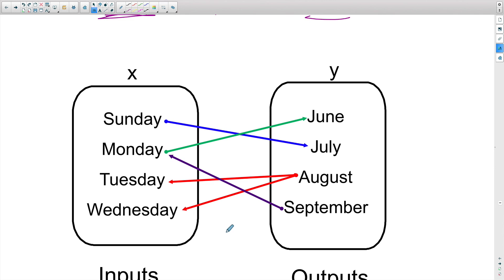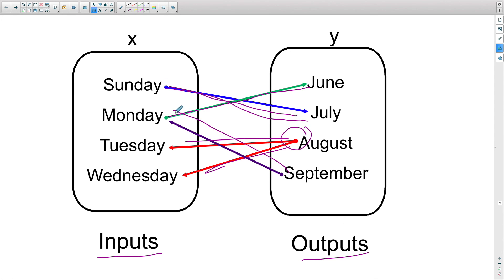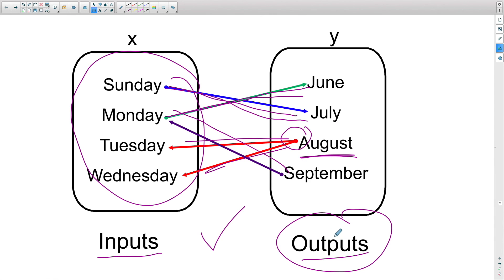Let's look at another example. You can see that August on the output side goes to both Tuesday and Wednesday — the y is repeating here, and remember, y can repeat. Checking the inputs: Sunday goes to one output, Monday to one, September to one, and August to one — there is no repeat on the x. So this is a function, because even though August repeats, it's part of the outputs, and outputs can repeat in a function.